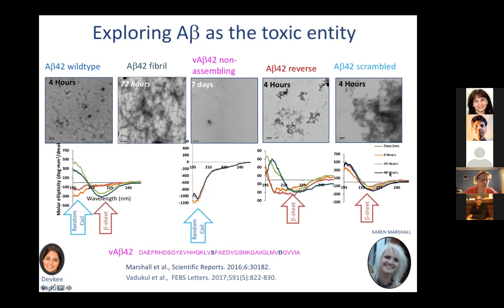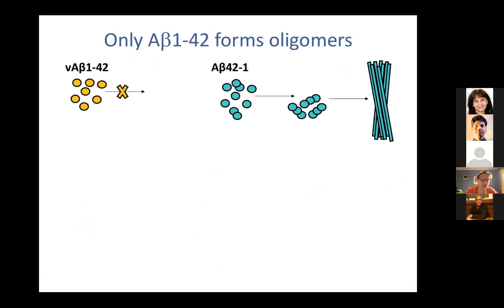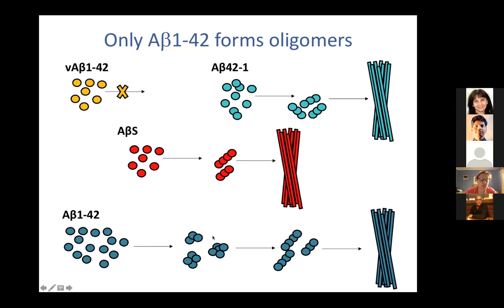This gives us a useful set of tools: oligomers of wild-type Abeta and fibrils, variant Abeta that doesn't form fibrils at all, and the reverse and scrambled controls to look at toxicity. What we find is that only Abeta 1–42 exists as an oligomer for any meaningful length of time. The variant Abeta-42 doesn't form oligomers at all; the reverse goes pretty quickly into what we'd call protofibrils; the scrambled goes into more fibrillar structures; and wild-type Abeta-42 forms oligomers that seem to be present long enough for us to observe them as they form.